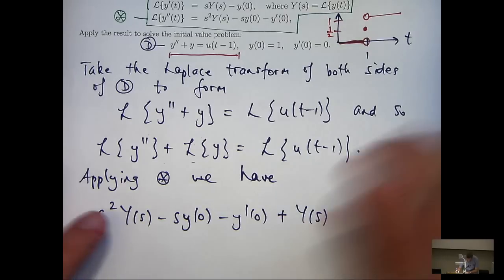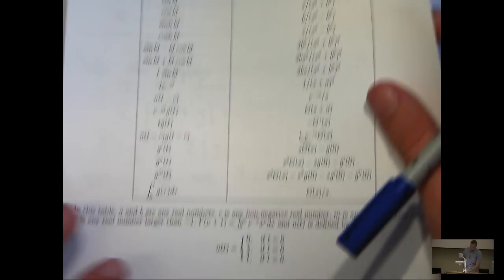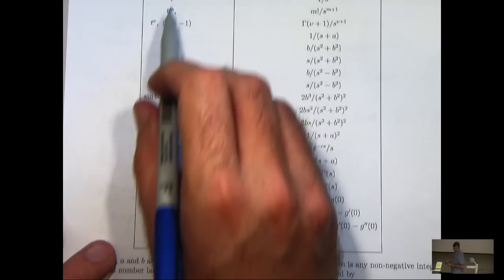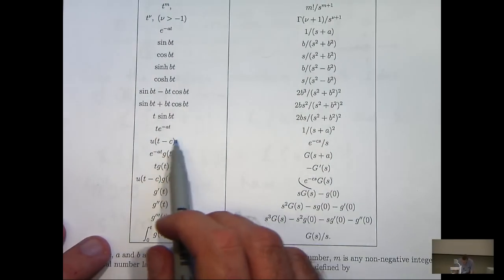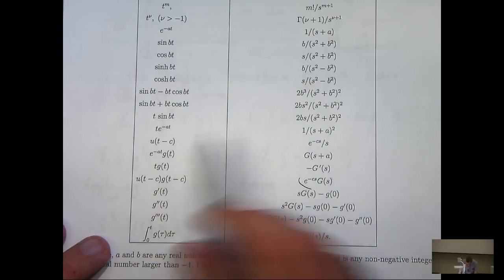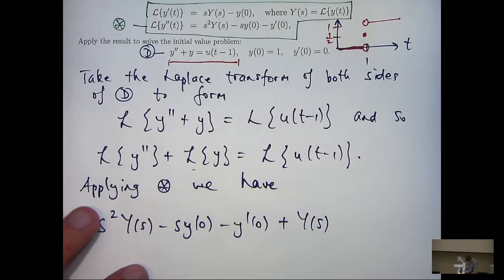And on the right hand side, well I can actually look this Laplace transform up, or calculate it directly. If I look down my left hand side, my table of Laplace transforms here, and I look over to the right, well this is the Laplace transform of the heaviside step function, in our case c equals 1.